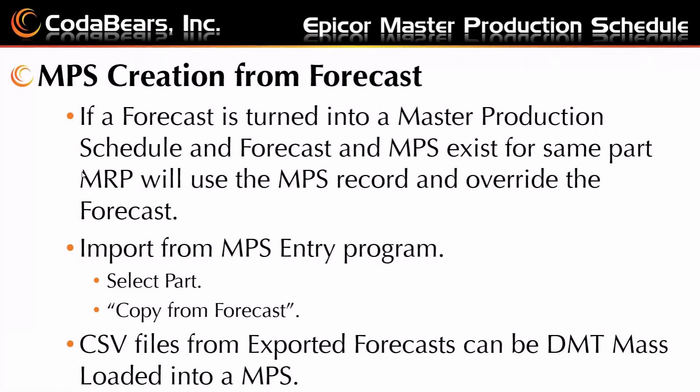To import into the master production schedule from the MPS entry program, you're going to select the part and there is an action to copy from forecast. Now that's doing it part by part, and it's kind of a gap that Epicor doesn't have a complete run where you can say, hey, I want my whole forecast imported as a master production schedule. That does not exist. You can, in fact, use the DMT tool and mass load forecasts into a master production schedule. So if you have thousands of parts in your forecast and you want to do them all at once, that requires the DMT, unfortunately — but it is easy to do with the DMT.